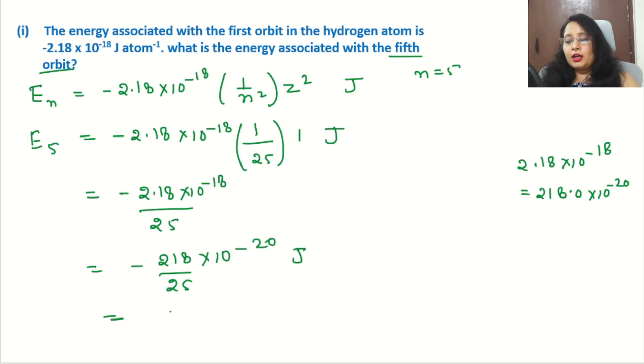The answer after all the calculation will be -8.72 × 10^-20 joule. This is the answer. The energy associated with the fifth orbit is -8.72 × 10^-20 joule.